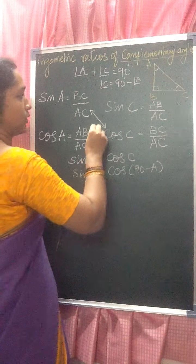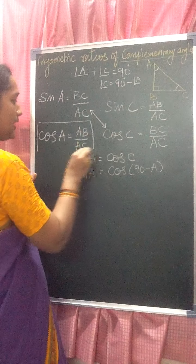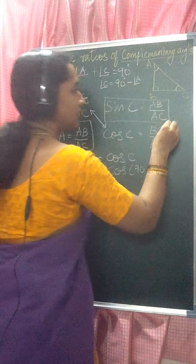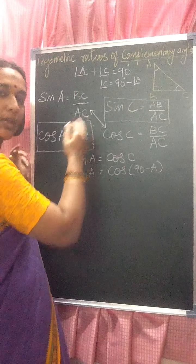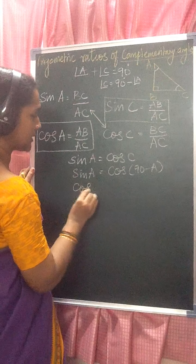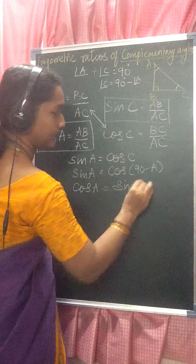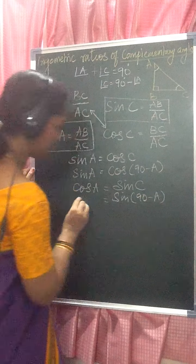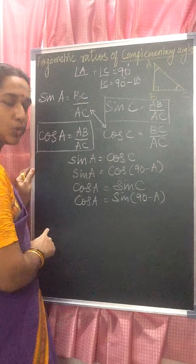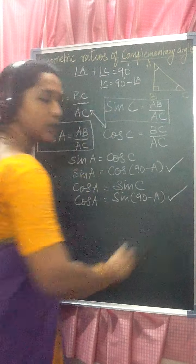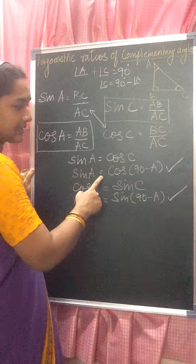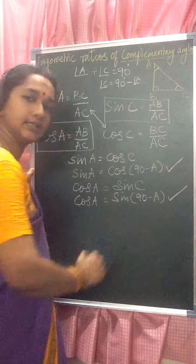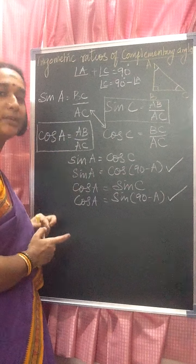Same way here also: cos A equals AB/AC, and sine C also equals AB/AC. So these two values are equal, meaning cos A is equal to sine C. Replacing C with 90 minus A: cos A is equal to sin(90 minus A). So these two are complementary angle relationships.